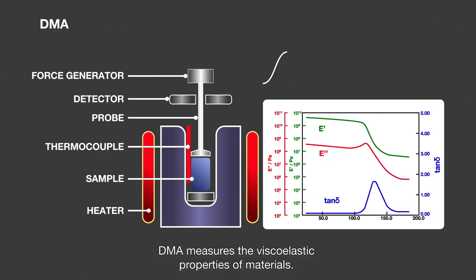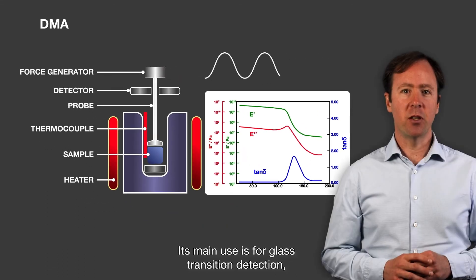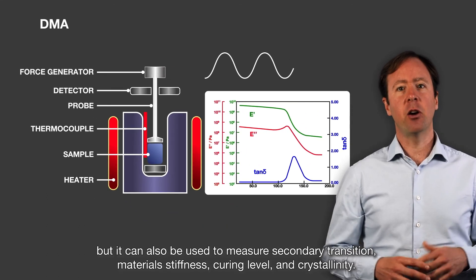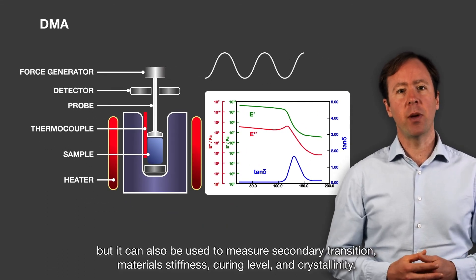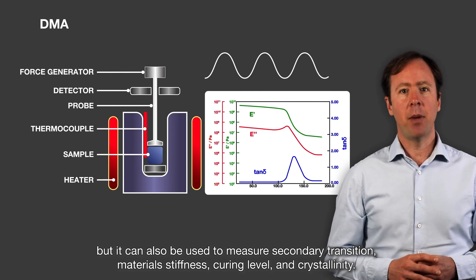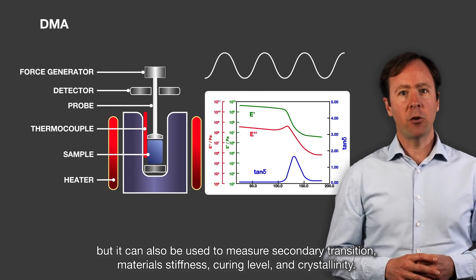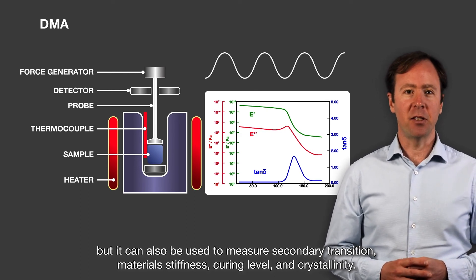DMA measures the viscoelastic properties of materials. Its main use is for glass transition detection, but it can also be used for measuring secondary transition, material stiffness, curing level and crystallinity.